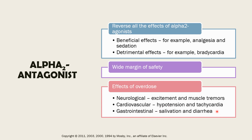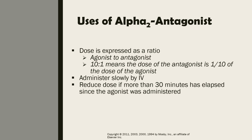The dose of our alpha-2 antagonist is determined relative to the agonist. It is expressed as a ratio in agonist-to-antagonist format. For example, a ratio of 10:1 means that the dose of the antagonist is one-tenth of the dose of the agonist.